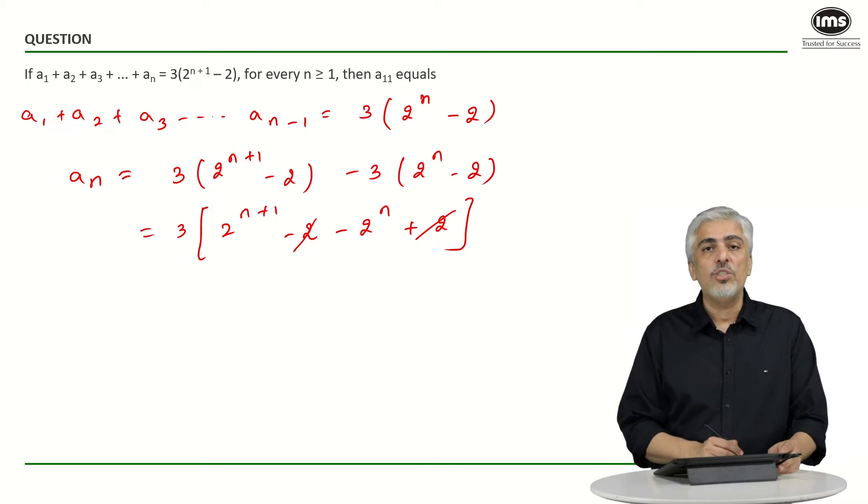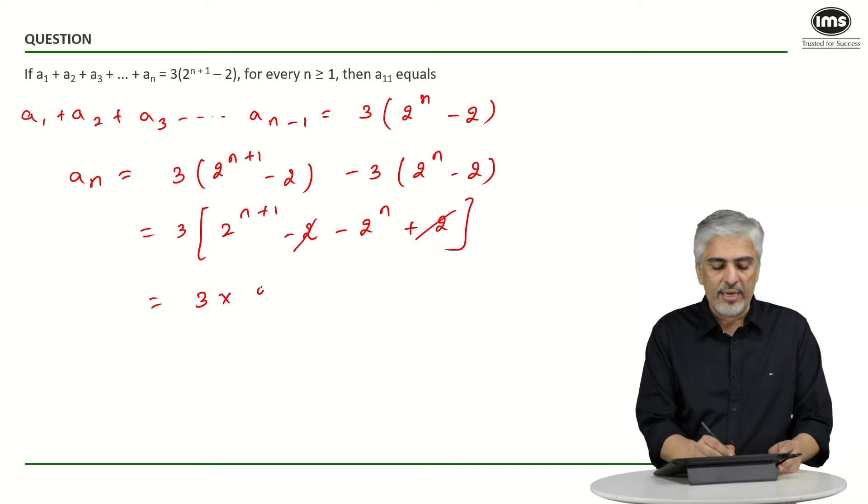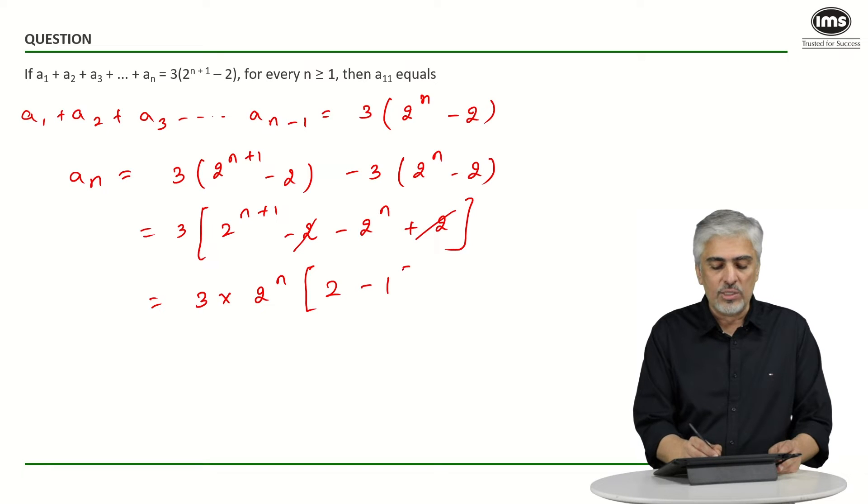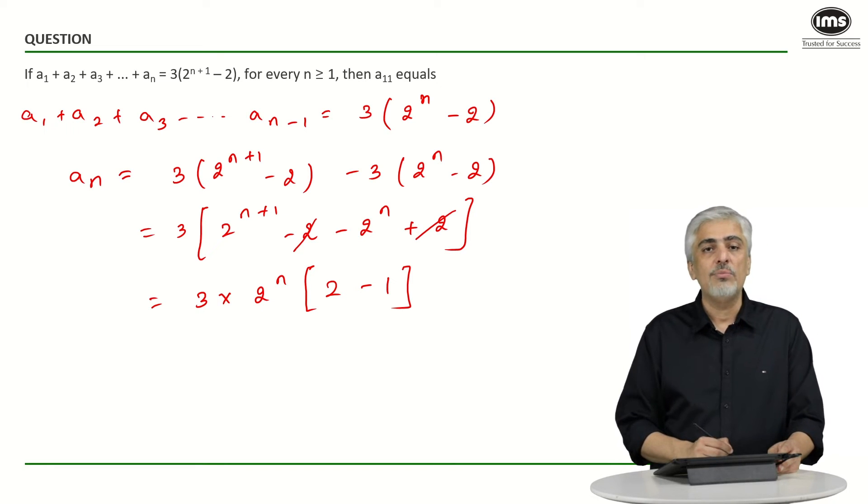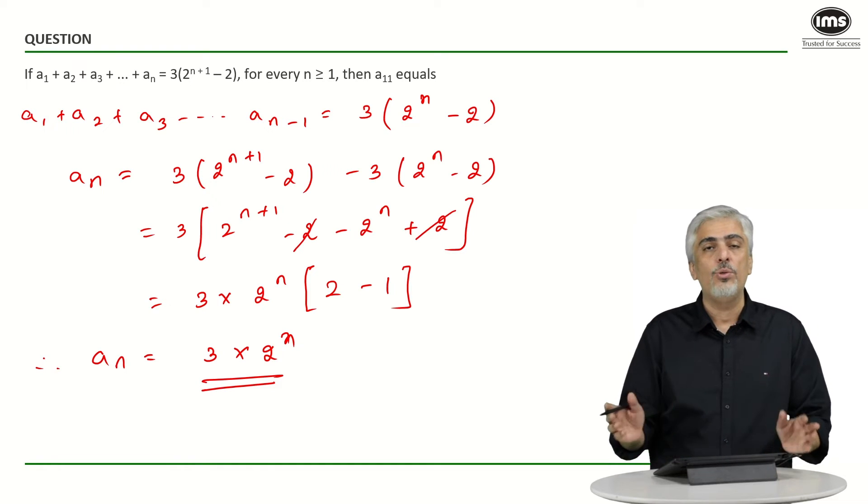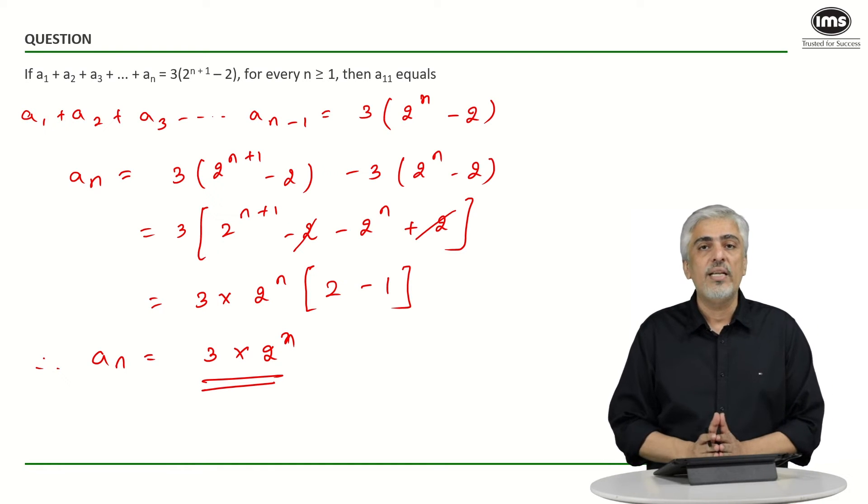We can take 2 raise to n common. So we will get 3 into 2 raise to n common. I hope you know the basics of indices and you will be left with 2 raise to 1 minus 1. 2 minus 1 over here becomes 1. So I have got therefore aₙ is 3 into 2^n. Now this is as I said the standard way to do the question.